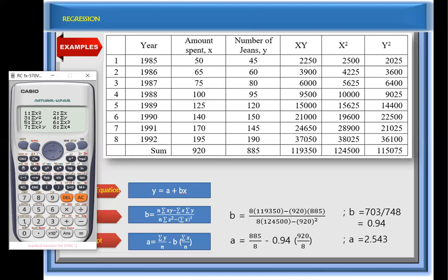Summation of x squared, number one equals summation of x squared. So we have the x squared here, the sum is 124,500. So we got it right.